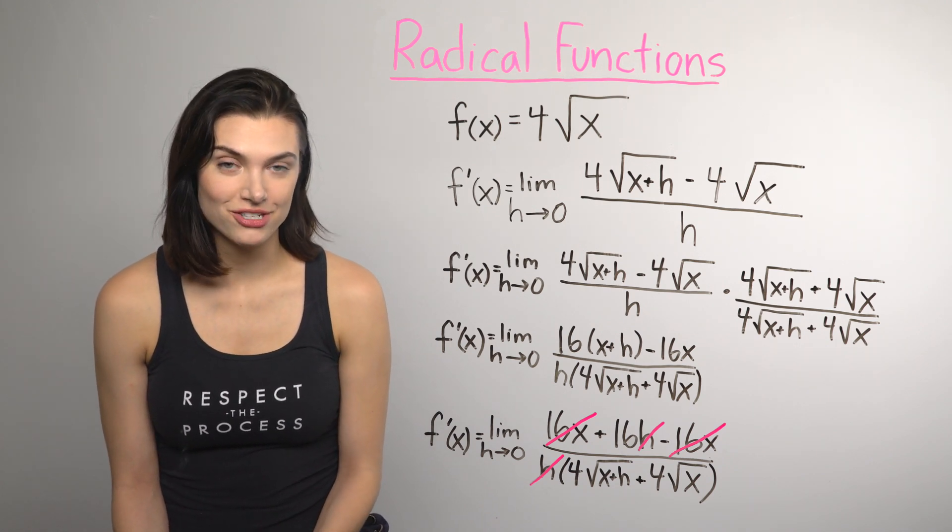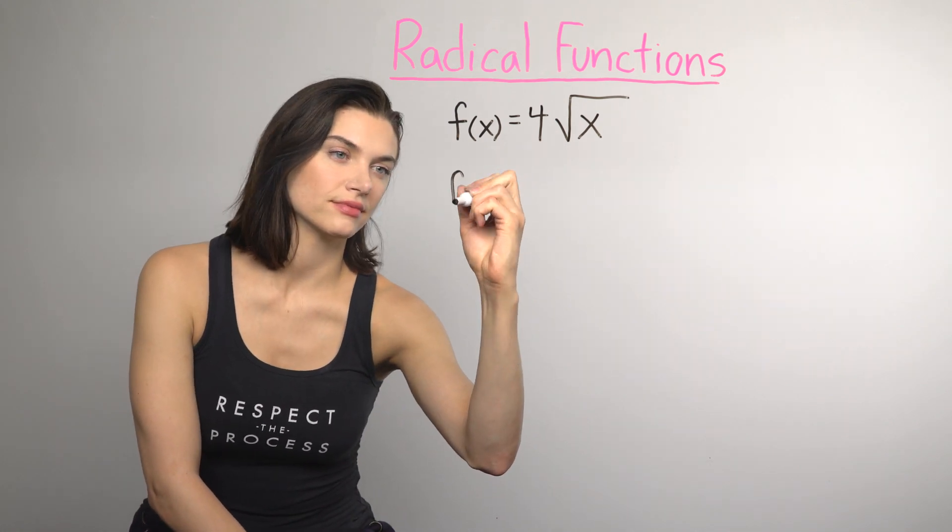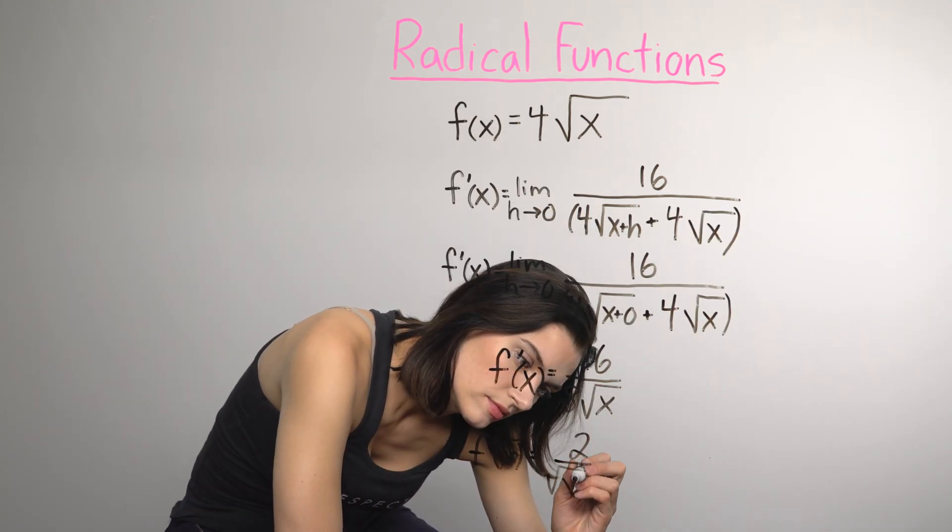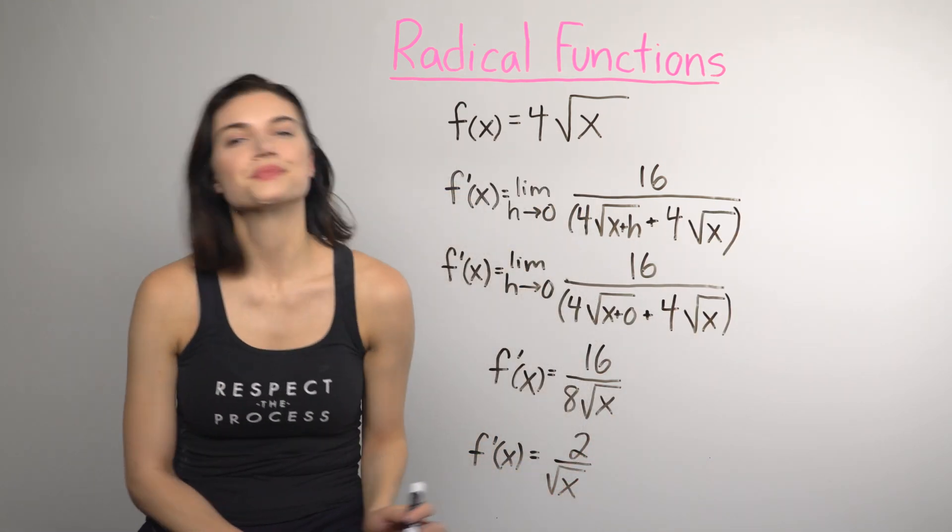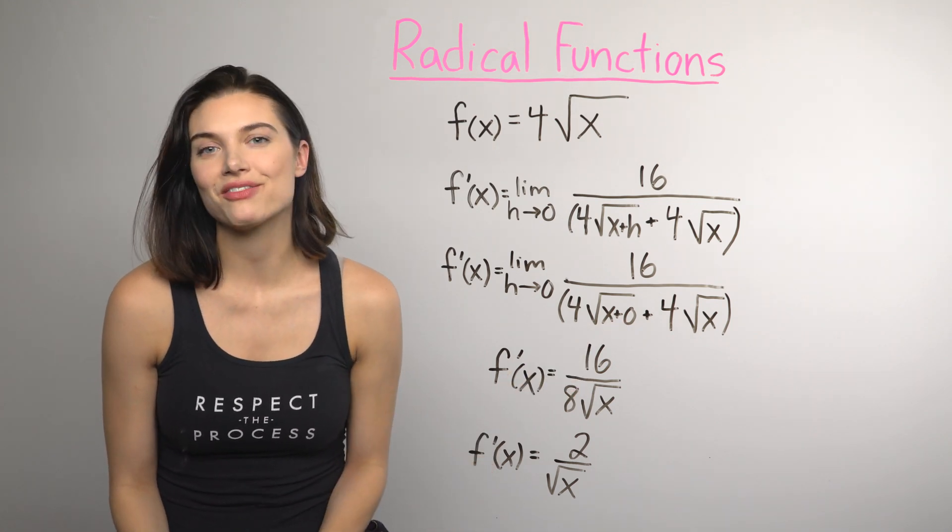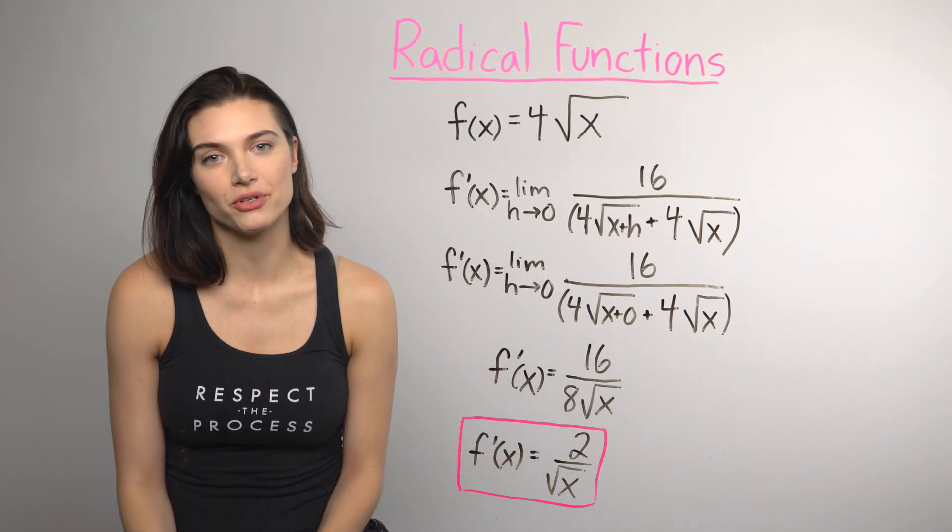Let's try plugging 0 in for h and get this done. And after substituting 0 in for h and a little simplifying, we have the derivative, which is f prime of x equals 2 over the square root of x.